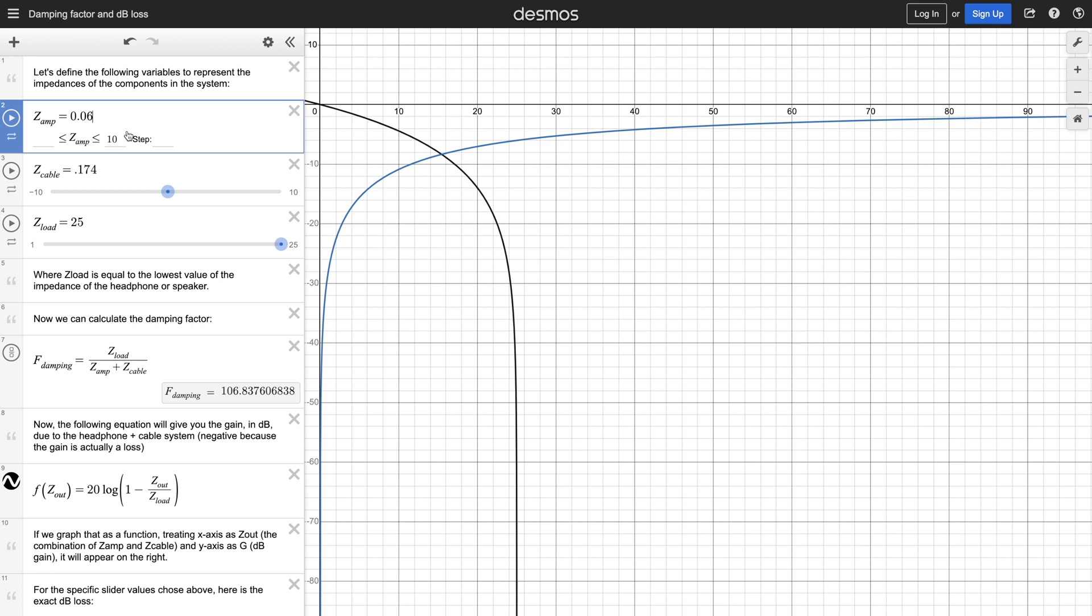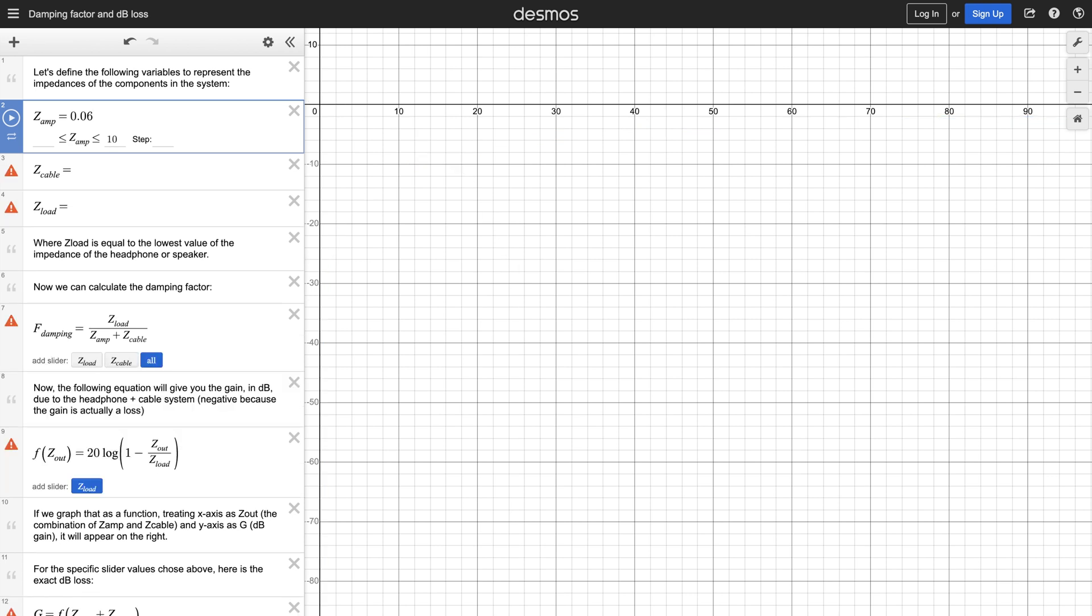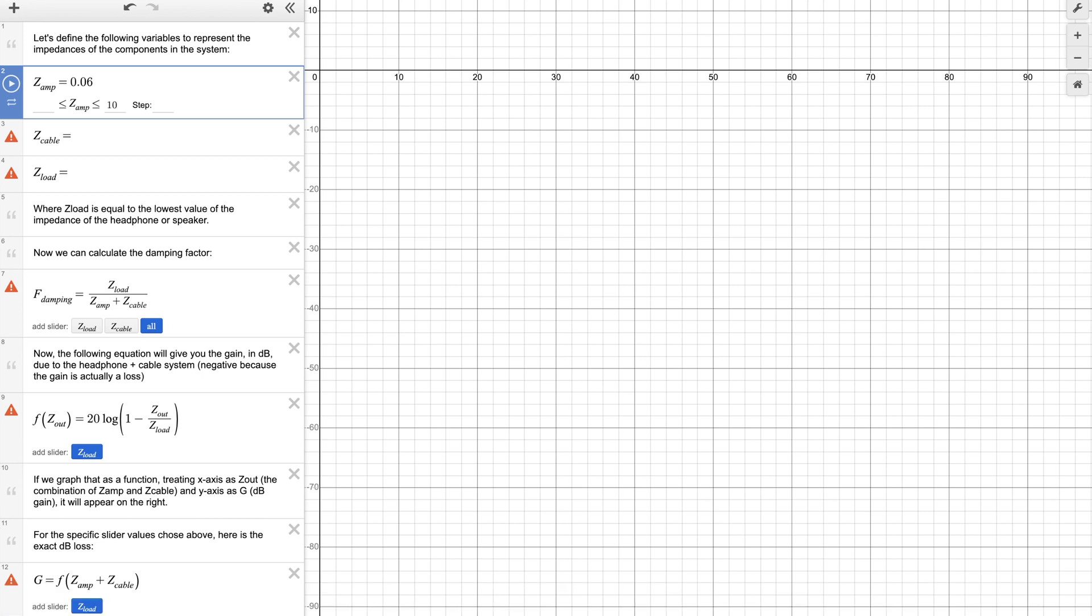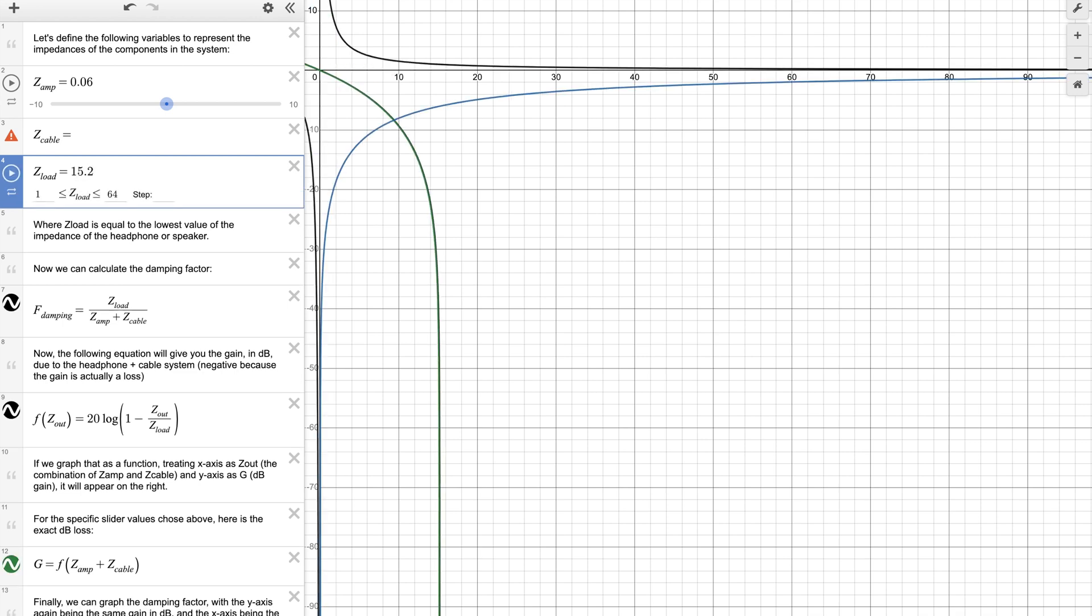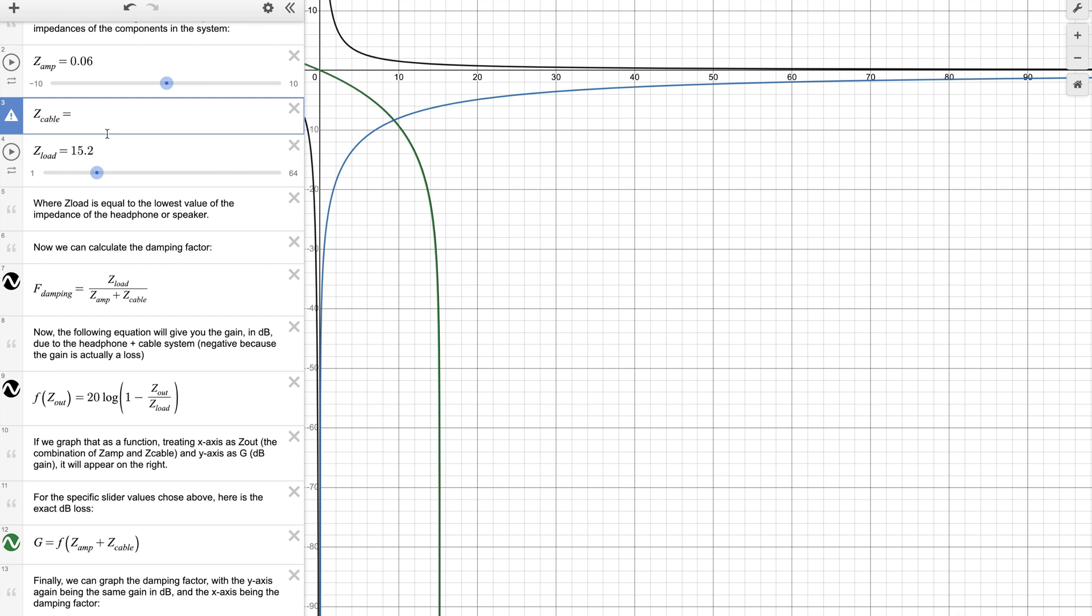This is also assuming the output impedance of the amplifier is flat across all frequencies. If you would like to use the output impedance of your own amplifier, feel free to do so, as I have linked this model in the description. My load impedance, or the impedance of the Moondrop Variations at 1 kHz, is 15.2 ohms.